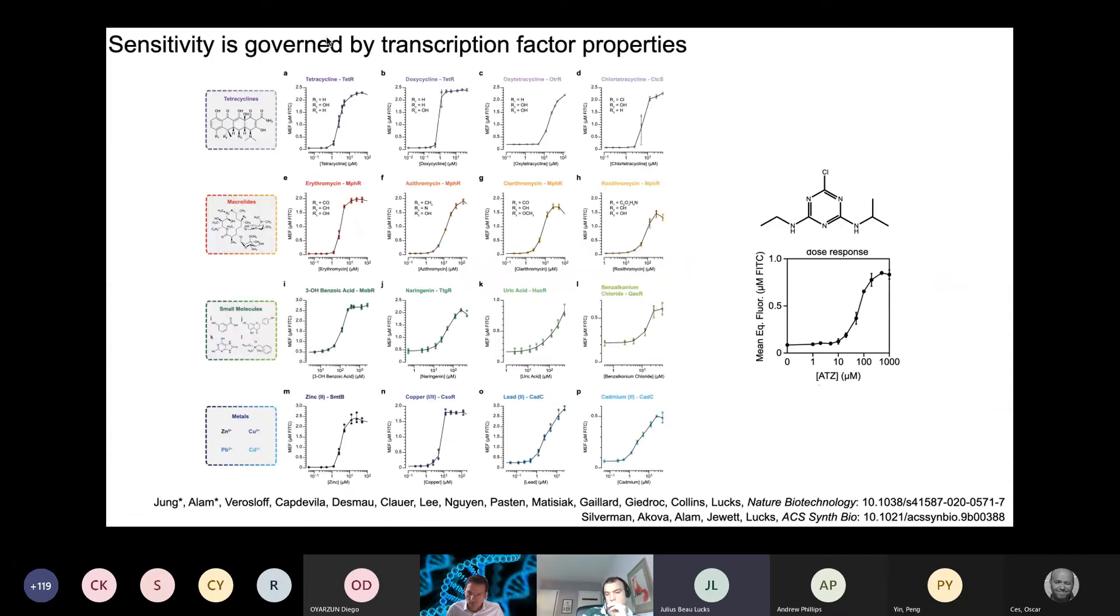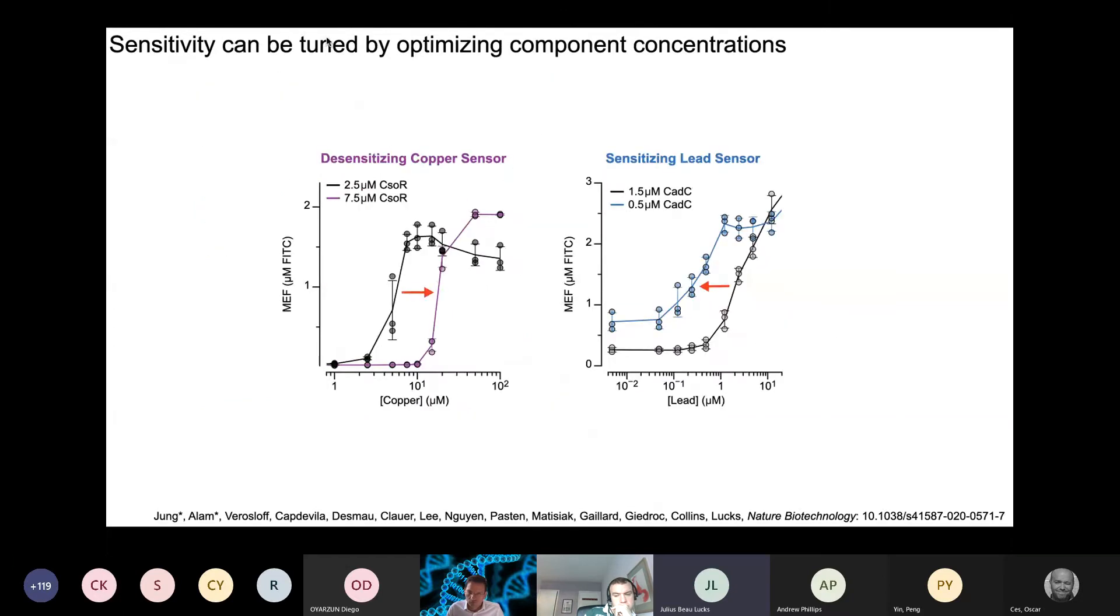Sensitivity is also really important. These are the dose response curves for everything we're reporting. Most of these transcription factors are in the micromolar range. And depending on the compound and what's toxic, that can be good enough. They can actually be too sensitive or, in quite a few cases, not sensitive enough. What's cool about the cell-free system, as opposed to whole cell biosensors, is you can tune some of these dose response curves by changing molecular concentration. So on the left, we actually have to desensitize the copper sensor, and we can do that by adding more transcription factor. And on the right, you can do the same thing. We need to sensitize the lead sensor by decreasing the amount of transcription factor, although you'll notice that the leak increases in that case, which is a trade-off there, not so desirable.